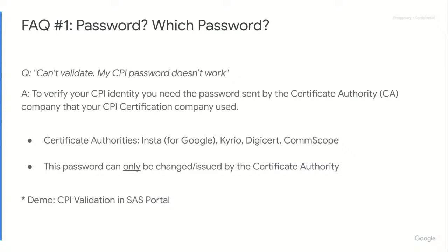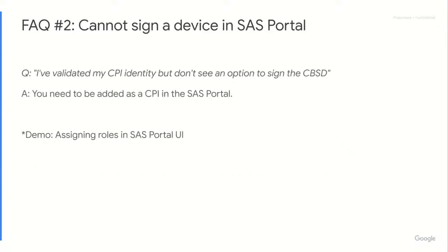That's FAQ number one — which password. We've talked about how to validate in the SAS portal and which password to use. FAQ number two: I cannot sign a device in the SAS portal. I validated my CPI identity, but I don't see an option to sign the CBSD. Hit refresh before signing your first device — that's a bug. But if after validating yourself as a CPI you still can't sign a device, let me show you why that might be.